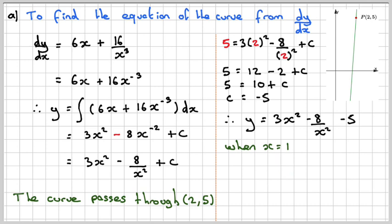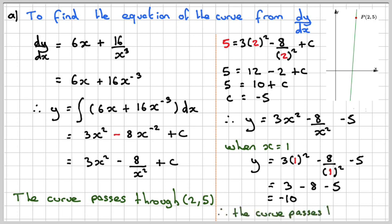When x is 1, we need to see whether this point goes through it, given in the question. We get y = 3(1²) - 8/(1²) - 5. So it gives me 3 - 8 - 5, which will give me -10. Therefore, make a conclusion, the curve passes through the point (1, -10).